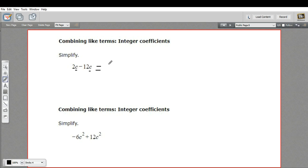You can punch that in your calculator if you need to, that's a negative 10. And we just keep the C. So 2 C minus 12 C is negative 10 C.